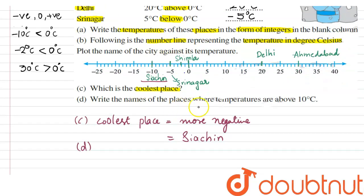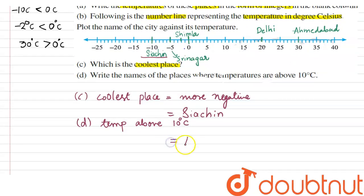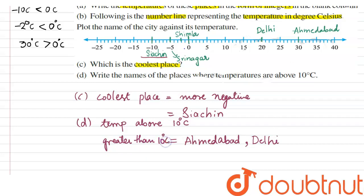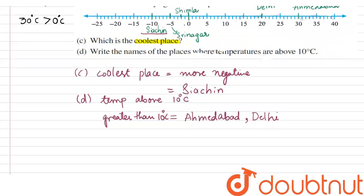Fourth question: write the names of places where temperatures are above 10 degrees. We need cities whose integer value is greater than 10. Those cities are Ahmedabad and Delhi. So our fourth answer: cities with temperature greater than 10 degrees = Delhi, Ahmedabad. These are all our answers — thank you.